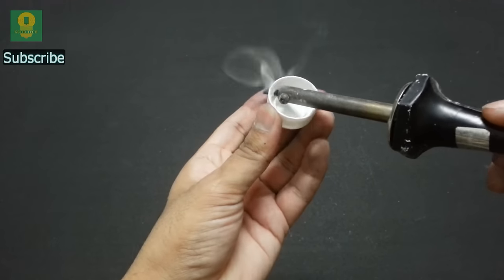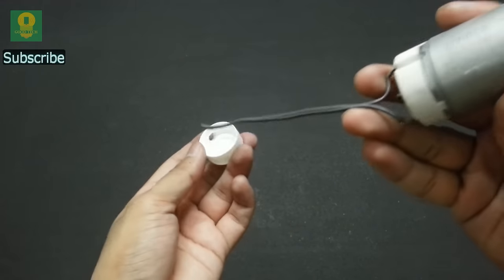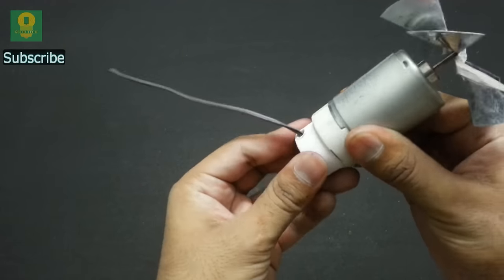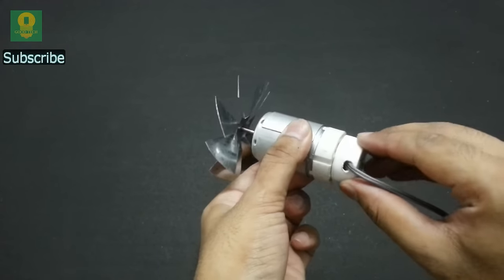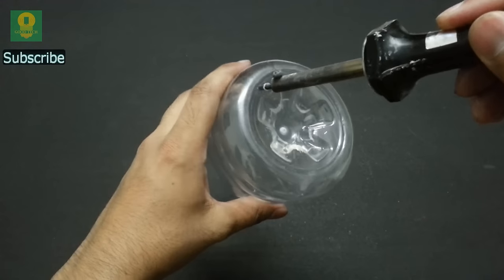Now, make a hole at the side of the bottle cap. Fix the motor to the bottle cap and secure it with hot glue. Make a few holes at the base of the large bottle.